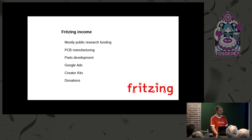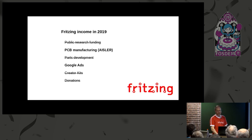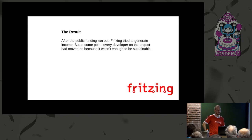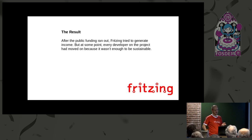Donations were also below minimum wage for one developer — not sufficient. In 2019 the situation was even worse: only PCB manufacturing by Isla and Google Ads remained. In the result, after the funding ran out, every developer eventually left the project and moved on. A major part of the Fritzing code was developed by paid developers, so it's a professional project and not easy to get into.